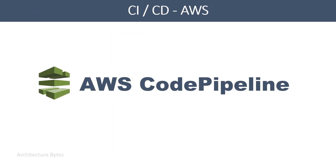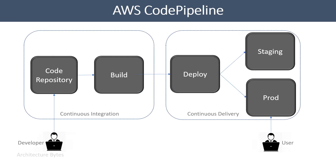CI/CD is implemented on AWS with AWS Code Pipeline. Code Pipeline is a bundle of fully managed AWS services that builds, tests, and deploys your code. Before we understand how an AWS Code Pipeline works, let's review some important terms.